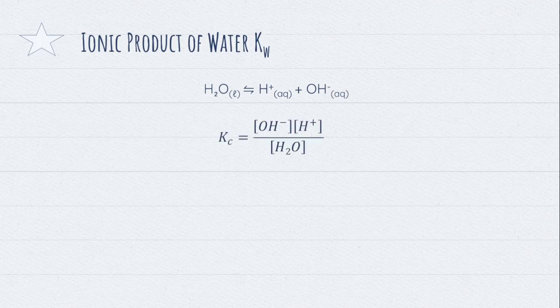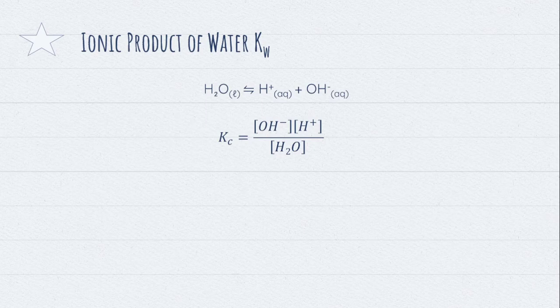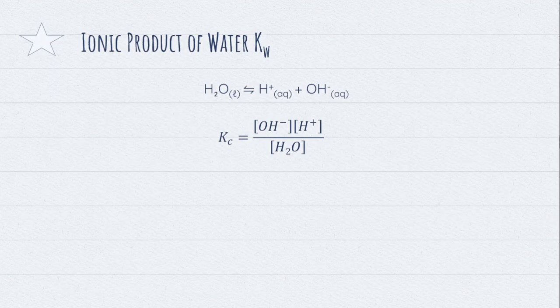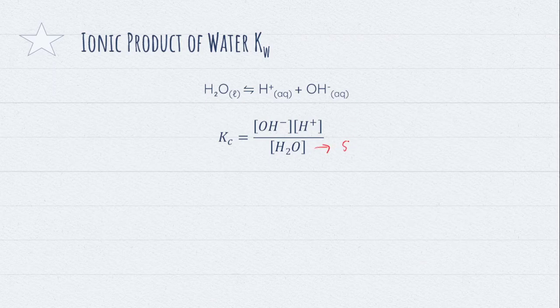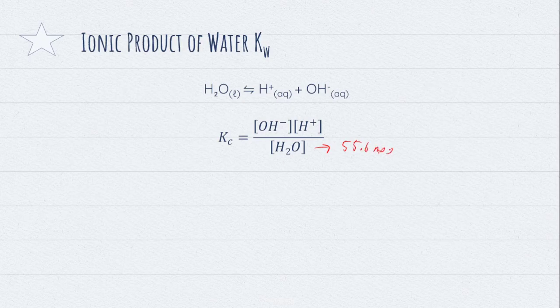So, from here, we can create the equilibrium constant equation, Kc equals OH- times H+ over H2O, products on top, reactants at the bottom. And the idea is, first of all, we know that concentration of H2O is 55.6 mol per dm³.